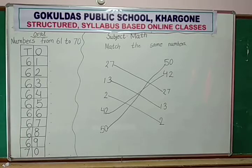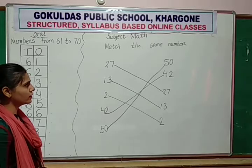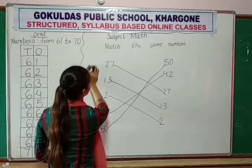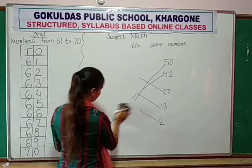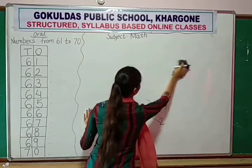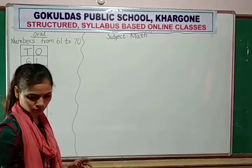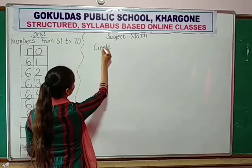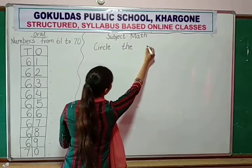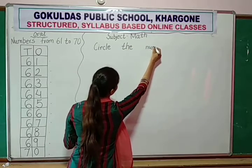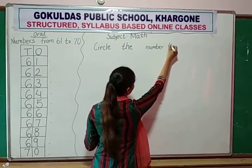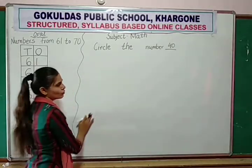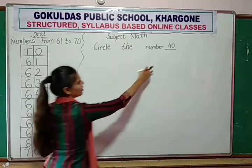If you are done, then write next activity. Next activity: circle the number 40. Circle the number 40. There are so many numbers, so you find out 40 and circle the 40.